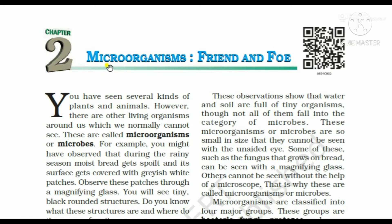Micro-organism means bahut chota organism — a very tiny organism. Friend means dost and Foe means shatru. There are other living organisms around us which we normally cannot see. These are called microorganisms or microbes.